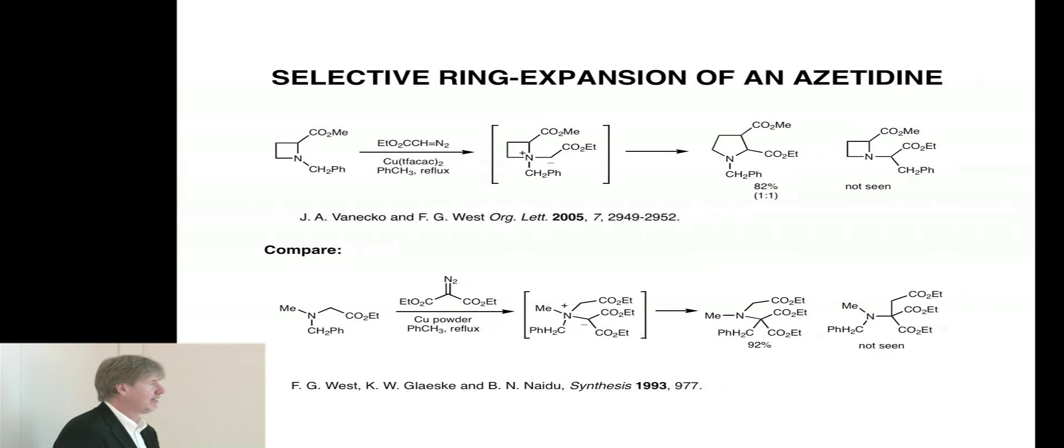That was an interesting result because look at this case. Here we have a nitrogen, and just like this one, it's got a benzyl group and an ester-substituted carbon. Both are reasonable migrating groups. This is treated with this malonate reagent, copper. Here we generate an ammonium ylid. Now in this case, the only group that migrates is the benzyl group, 92% yield benzyl migration, no migration of this group.